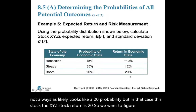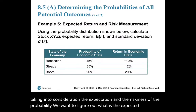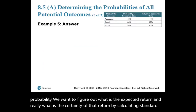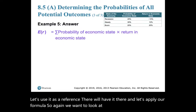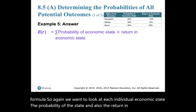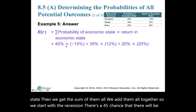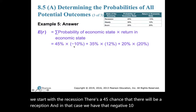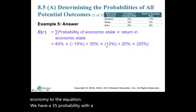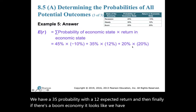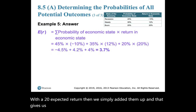We want to figure out the expected return and the certainty of that return by calculating the standard deviation. Applying the formula: recession has a 45% chance with a negative 10% return; steady economy has a 35% probability with a 12% expected return; and boom economy has a 20% chance with a 20% expected return. We simply add them up to get our expected return for this stock.